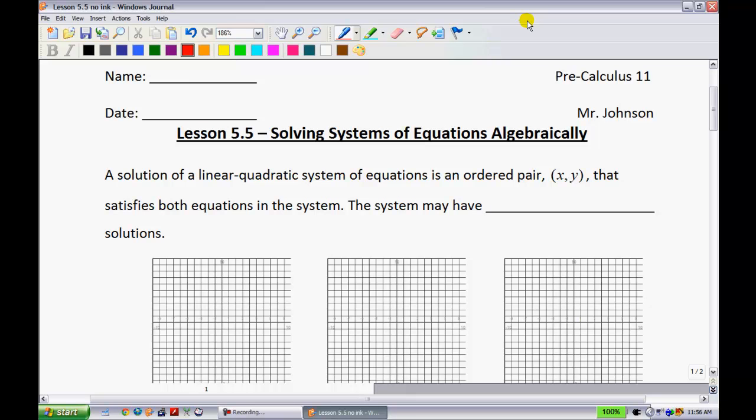Lesson 5.5 Solving Systems of Equations Algebraically. This is the final lesson in Unit 5. A solution of a linear quadratic system of equations is an ordered pair (x, y) that satisfies both equations in the system. The system may have 0, 1, or 2 solutions.